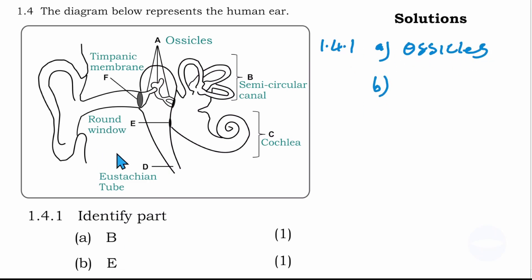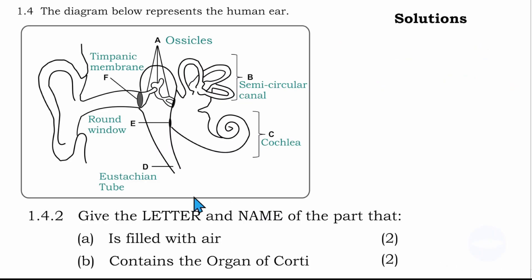The next question, 1.4.2, says give the letter and name of the part that is filled with air for number A, and number B contains the organ of Corti. Here we have to give the letter and the name. Because if you can see it's two marks, you have to write the letter and the name.